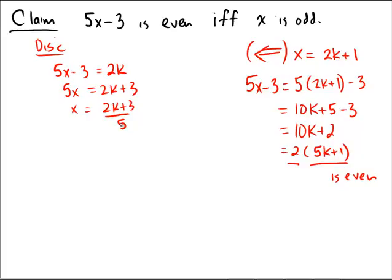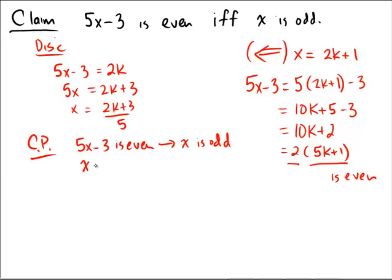So, instead of approaching the forward direction directly, let's do the forward direction by contrapositive. The contrapositive would mean that we're trying to show: 5x minus 3 is even implies x is odd. And contrapositive means that instead of doing that, we'll try to show that if x is not odd — in other words, if it were even — then hopefully 5x minus 3 will be not even, but will be odd.